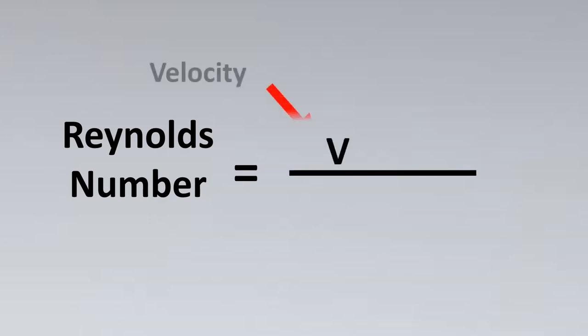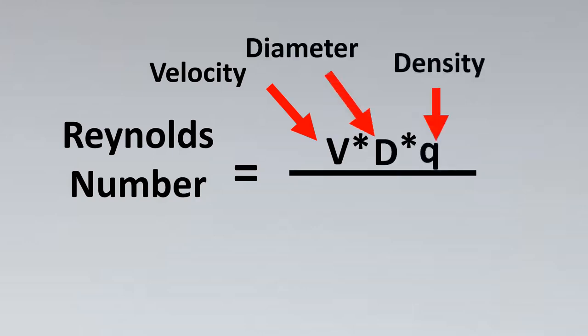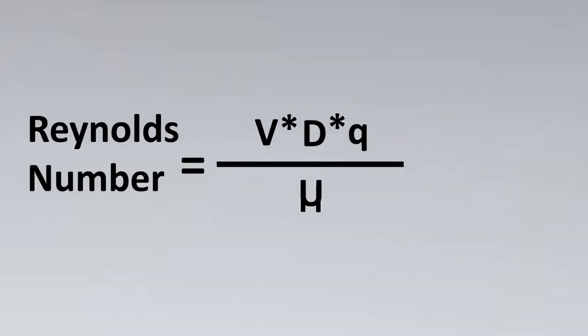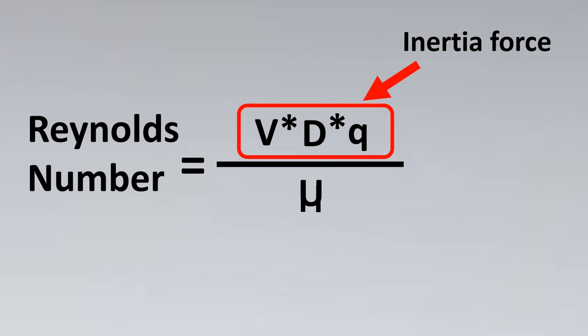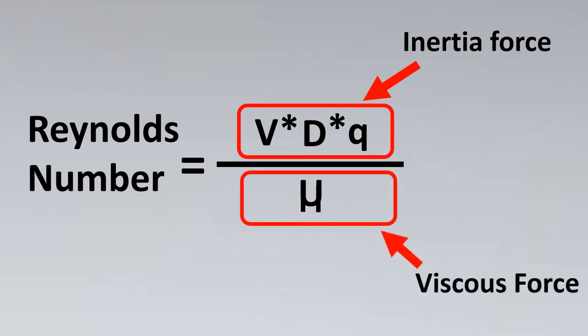We look into the Reynolds number equation. It is an amazing equation developed by Sir Reynolds. In this, the velocity stands for v, D stands for diameter, and this is our density. And the denominator has the coefficient of viscosity. Now this has a very interesting observation. The observation is that the numerator is basically the inertial forces that are acting on the fluid, like the velocity, the diameter, and the density. And if you look below, this is the viscous force or the viscous forces which are acting on the fluid.